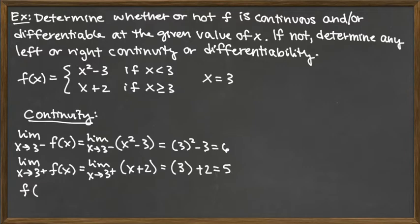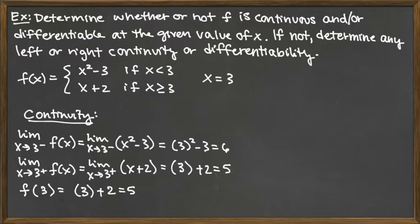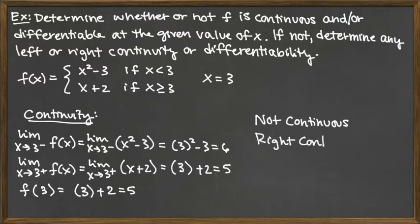The last thing to assess is f of 3. The piece that includes the equal sign is x greater than or equal to 3, so we use the line: f of 3 equals 3 plus 2, which is 5. Looking at all three values — left limit is 6, right limit is 5, f(3) is 5 — they're not all the same, so the function is not continuous. The left-hand limit doesn't match the others, but the right-hand limit does match the function value, so it is right continuous.